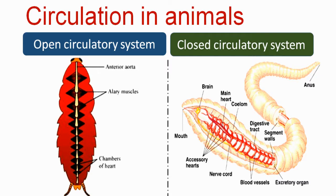In Annelida, there is a dorsal blood vessel and a ventral blood vessel, through which blood passes. Blood is carried through definite blood vessels.